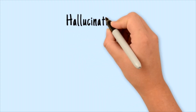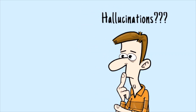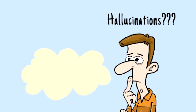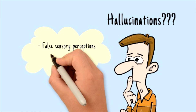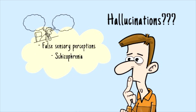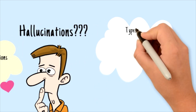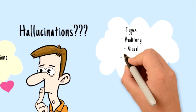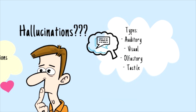Do you know what are hallucinations? Hallucinations are false sensory perceptions. Sensory means related to the senses like touch, hearing, and smell, and it is the most common symptom observed in schizophrenic patients. There are different types of hallucinations like auditory, visual, olfactory, and tactile. So let's talk about these types.